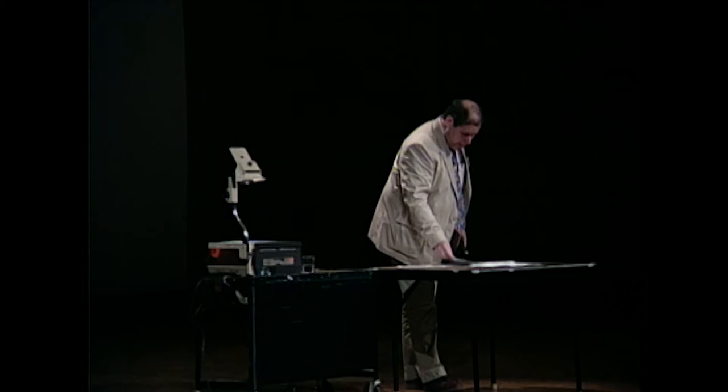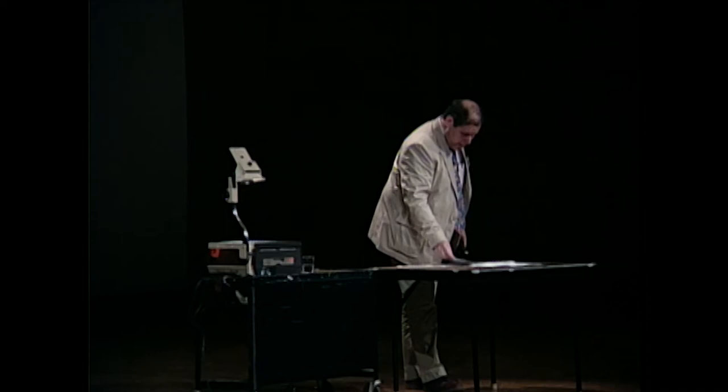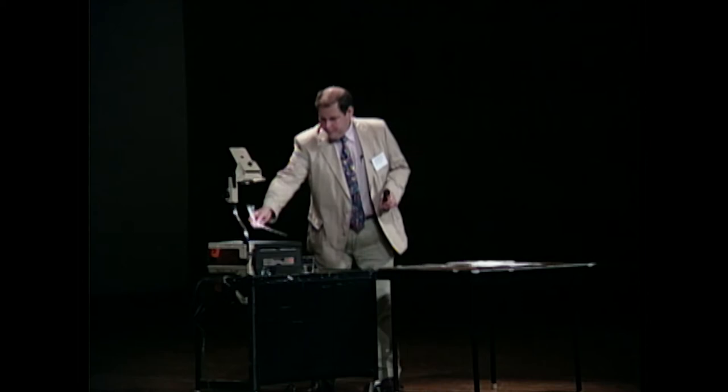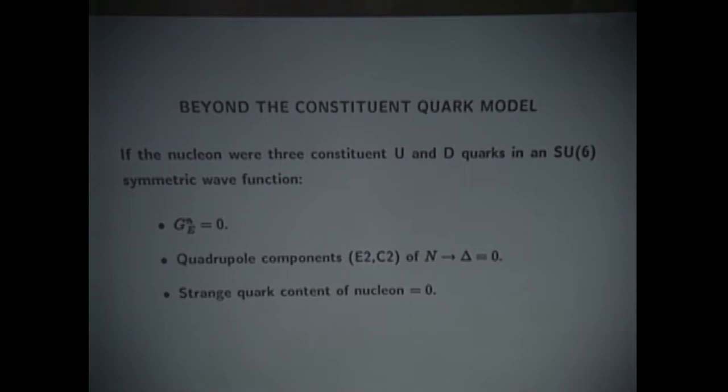Now I want to switch from nuclei to a nucleus, the nucleus of hydrogen, and talk about things that go beyond the constituent quark model. If the proton were really just U and D quarks in a spherically symmetric SU(6) wave function, there are three things that would be rigorously zero: the electric form factor of the neutron, the quadrupole components of the N to delta transition, and the strange quark content of the nucleon. Those are three things, if they're non-zero, that require us to go beyond this.